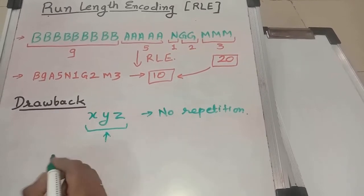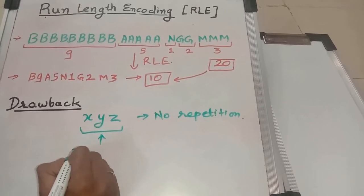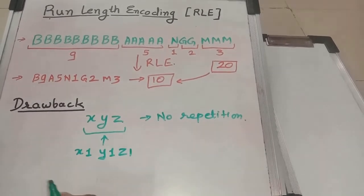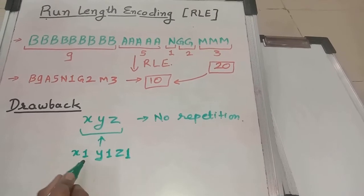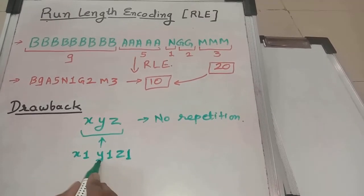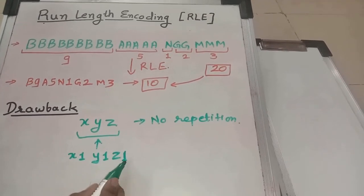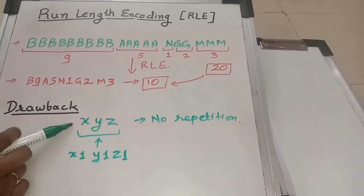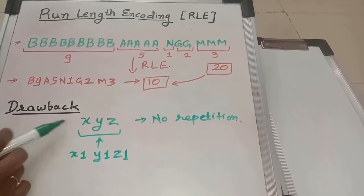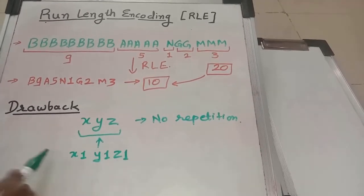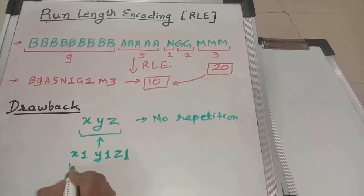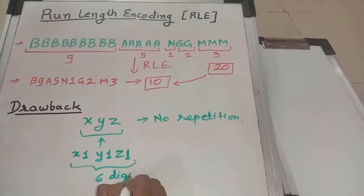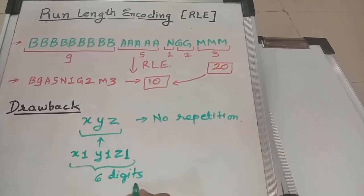By using RLE, we will encode it as x1, y1, and z1. Because x is occurring once, y is also occurring once, and z occurring once. So the original string contains 3 symbols, and when we encode this by using RLE, it will contain 6 symbols or digits.